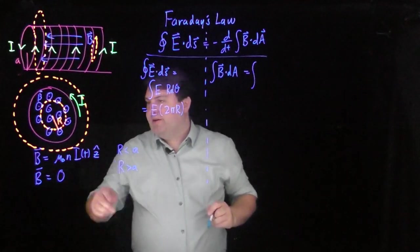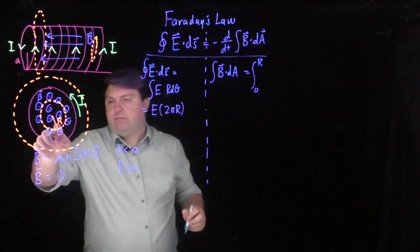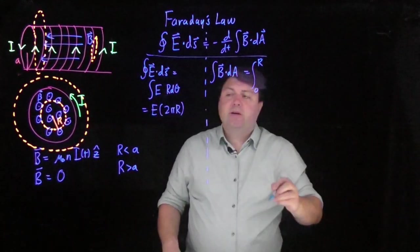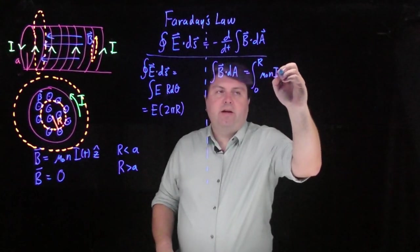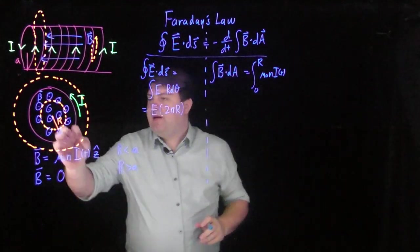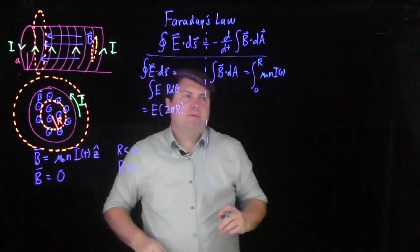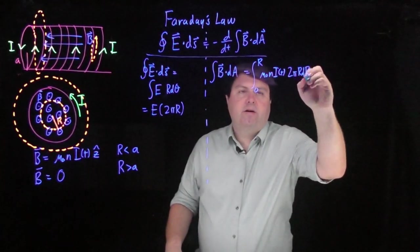It is our integral from 0 to the radius of the Faraday loop of our magnetic field, mu naught n i of t. And then our dA is the dA of a circle as we build up these rings, which is, as we saw before, 2 pi r dr.